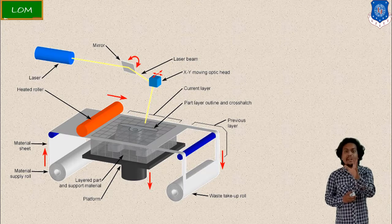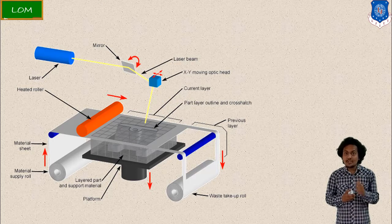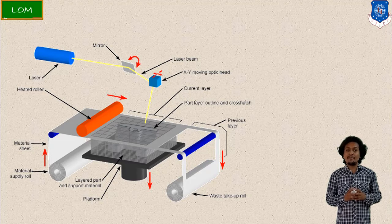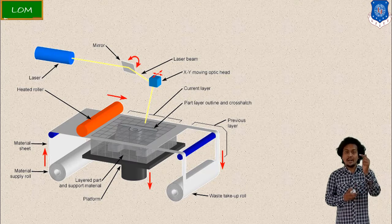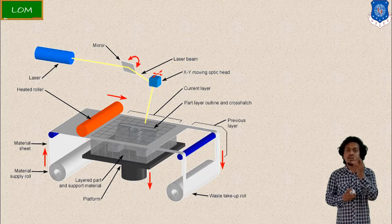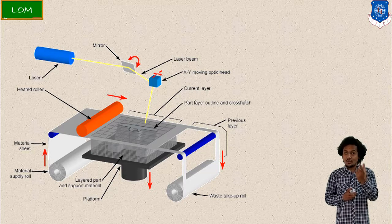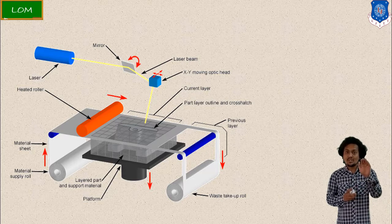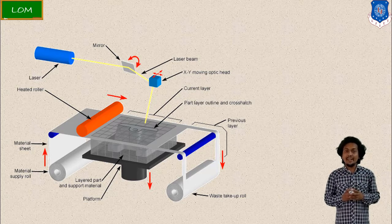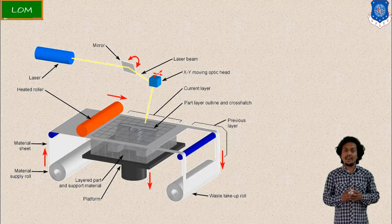For detailed construction of laminated object manufacturing: the laser — generally CO2 — generates heat energy. The laser strikes a mirror, which controls the movement of the laser beam. On the platform, a heated roller is provided. Its function is to settle each layer after cutting by laser scanning, providing heat so each new layer bonds easily with the layer already built below it.